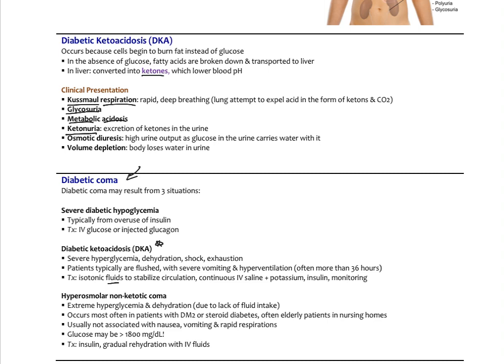You can also develop diabetic coma from severe hypoglycemia. That typically happens in type 1 patients who accidentally overdose on insulin — they take too much and develop severe hypoglycemia. I'll go over the hypoglycemia criteria later, but the treatment here would be IV glucose with injected glucagon.